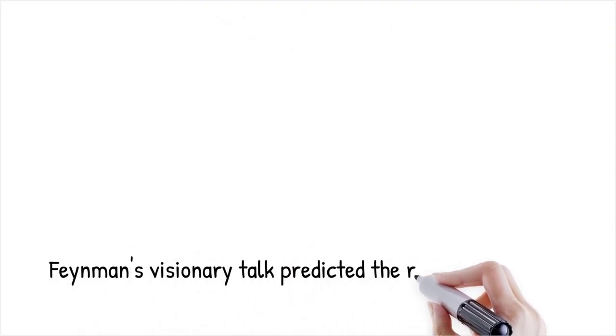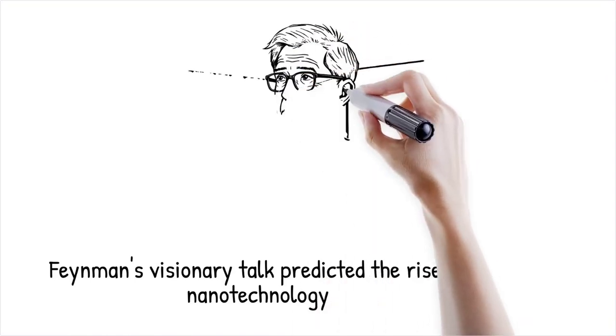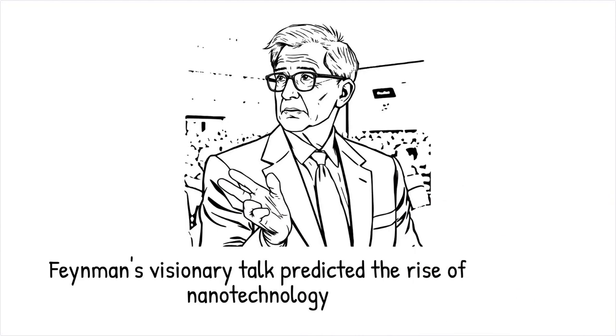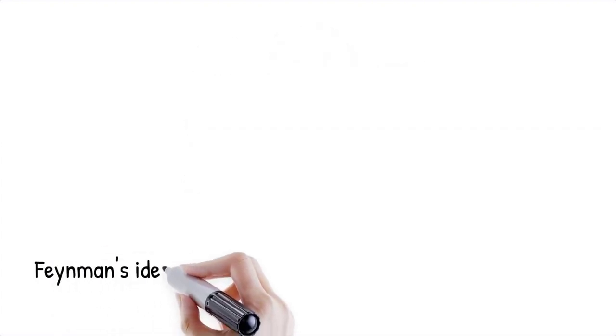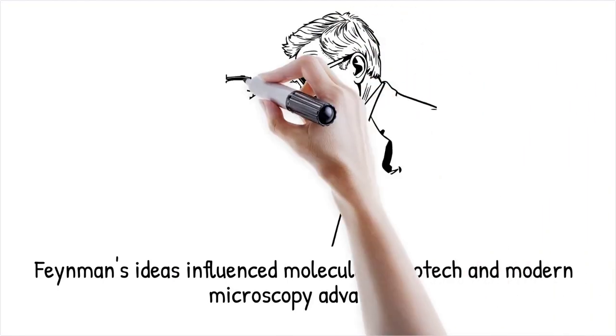In 1959, Feynman gave a visionary talk titled, There's Plenty of Room at the Bottom, predicting the rise of nanotechnology decades before it became a field. He described how scientists could manipulate atoms and molecules at the nanoscale to create smaller, faster, and more efficient materials. This idea later influenced the development of molecular nanotechnology, quantum dots, and atomic-scale engineering.